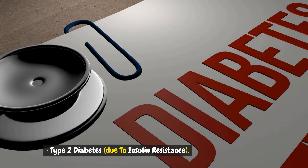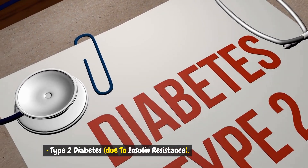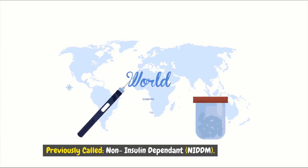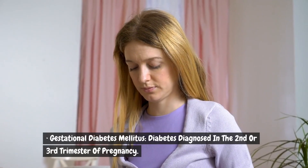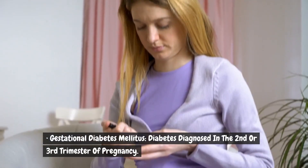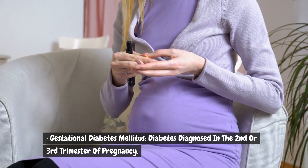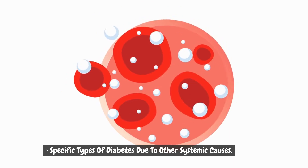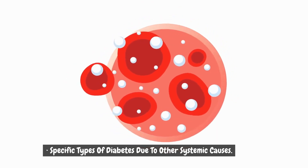Type 2 diabetes is due to insulin resistance. Previously called non-insulin dependent (NIDDM). Gestational diabetes mellitus is diabetes diagnosed in the second or third trimester of pregnancy. There are also specific types of diabetes due to other systemic causes.